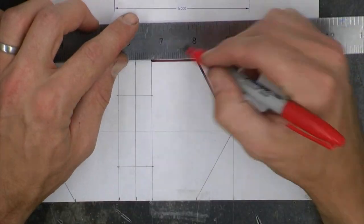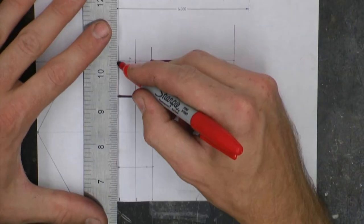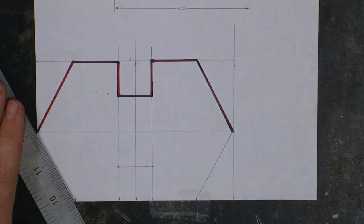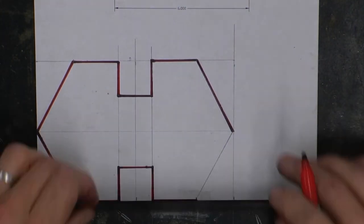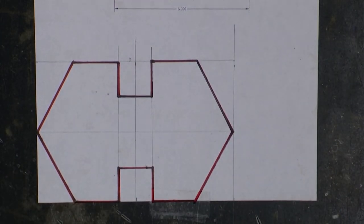And at this point, we have all of our outside lines of our object drawn. We just need to darken them in. And at this point, our angle bracket drawing is completed.